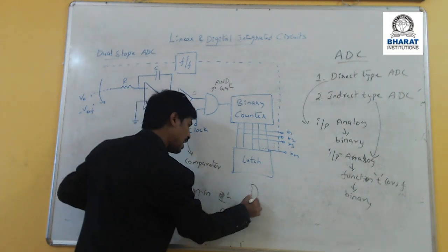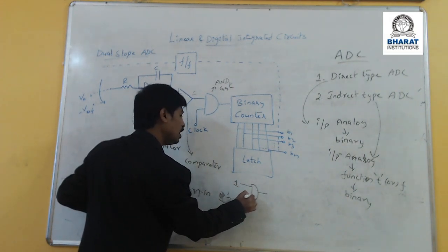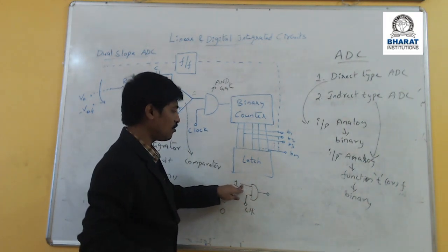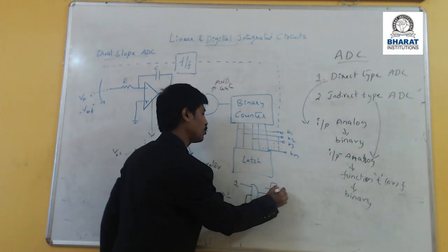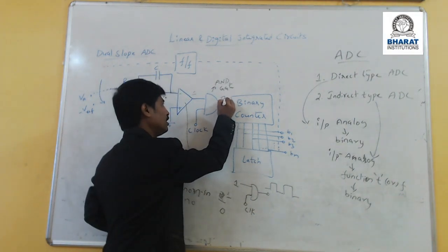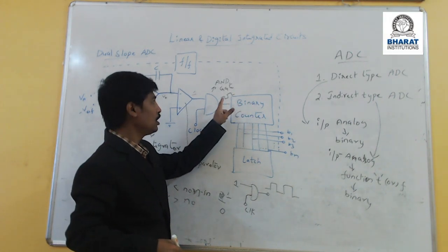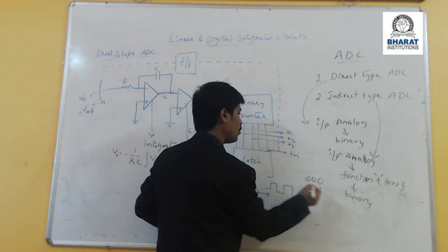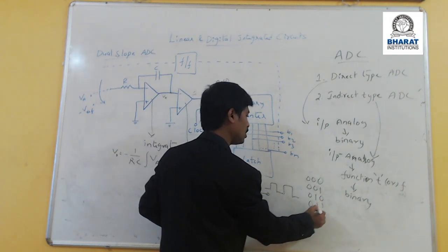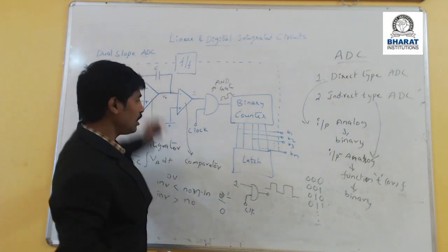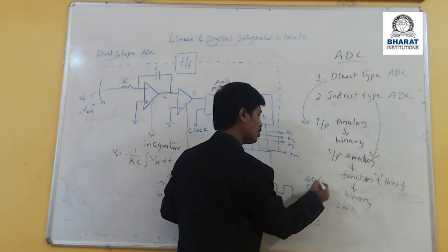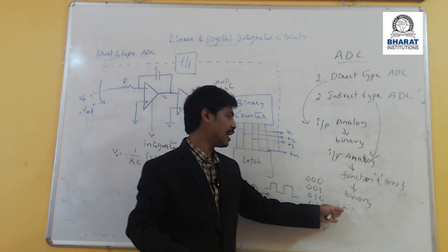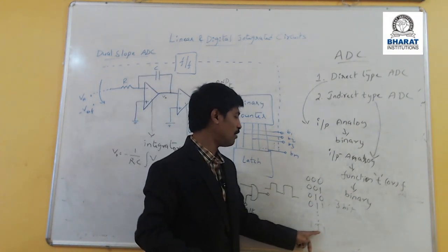Whenever one of the inputs to the AND gate is 1, the other input will determine your output. Here we are using the clock as another input. Whenever the input to the AND gate is 1 and the other input is the clock, you are going to get the clock as your output. After getting the clock, the main functioning of the binary counter is it will count the number of pulses. Initially we have reset. For the first clock pulse you get 001, then 010, then 011, and this continues. If you are taking a 3-bit ADC, you will get from 000 to 111. This binary data will be stored in the latch, and for 3-bit conversion ADC, 111 will be the last count.